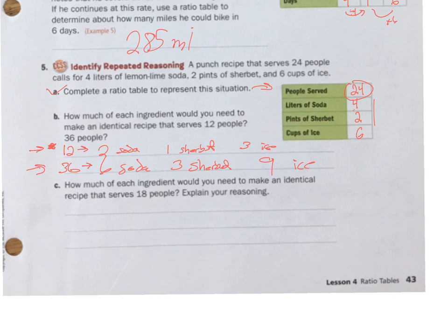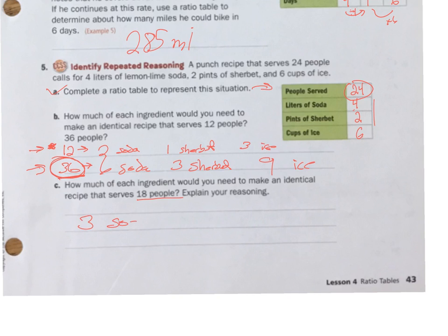The next part — serving 18 people — is a bit more complicated. I could go down to one unit and multiply by 18, but I realize that 18 is half of 36, and I already did the 36-person recipe. So I just cut the 36 recipe in half: three liters of soda, one and a half pints of sherbet, and four and a half cups of ice.